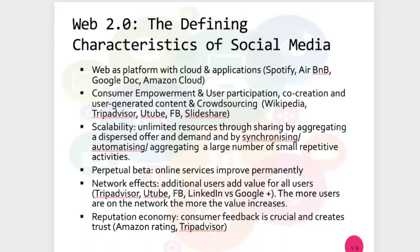Web 2.0 is also perpetual beta, which means it always improves and you never have a finished version of your software, like Office. There are network effects, which are very important — the more users use the network, the higher the value. This is what I told you about Google Plus: if you compare Facebook or LinkedIn with Google Plus, there are high network effects for Facebook because it has more than two billion users, whereas Google Plus has something like 100,000 users. If you cannot find your friends on the network, you have no network.